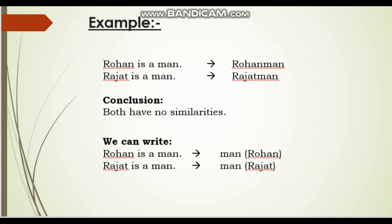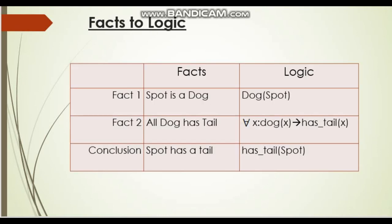Now another example: 'Spot is a dog' can be represented as dog(Spot), where Spot is the name of the dog. The next fact is 'all dogs have tails.'